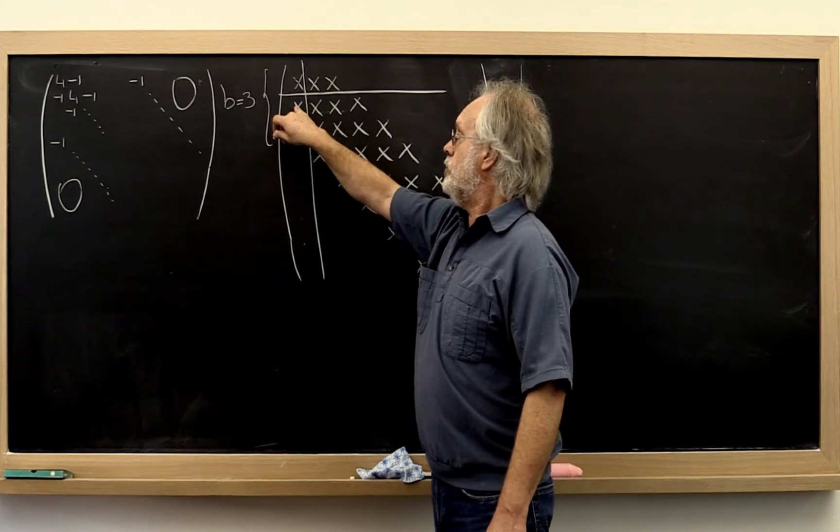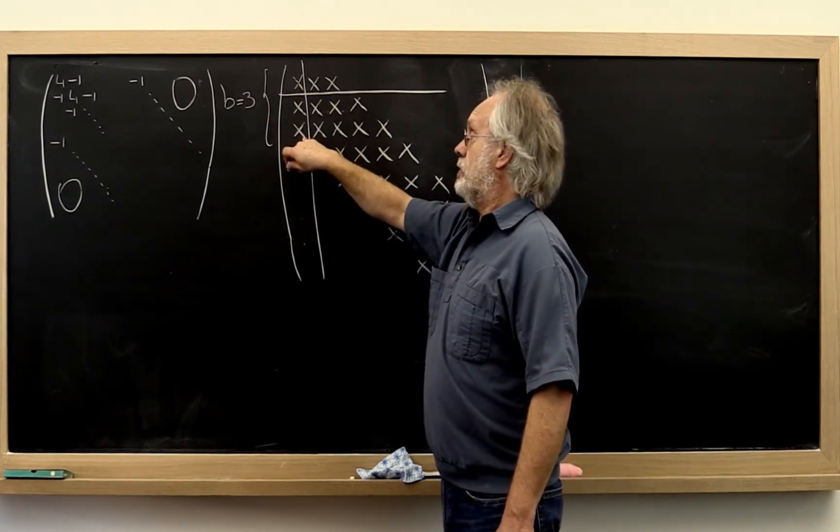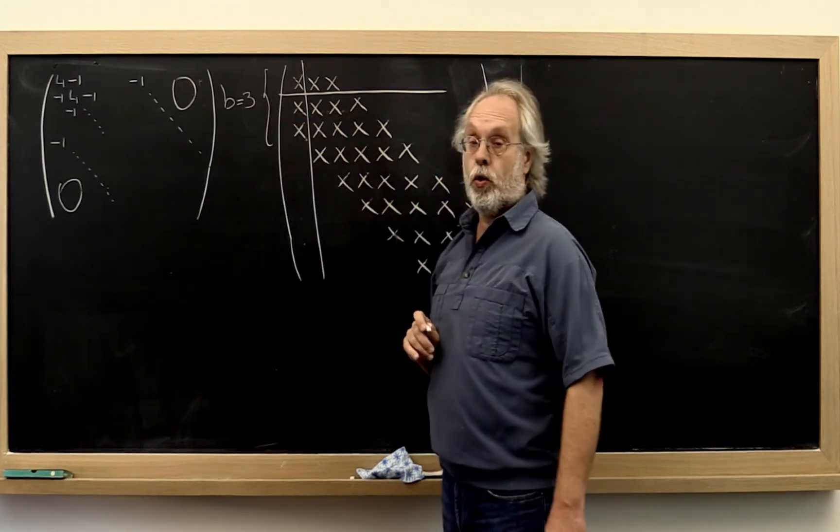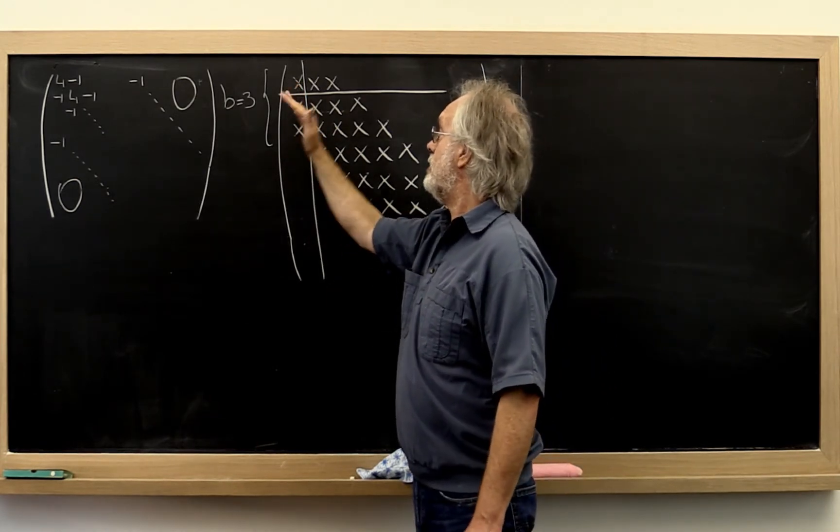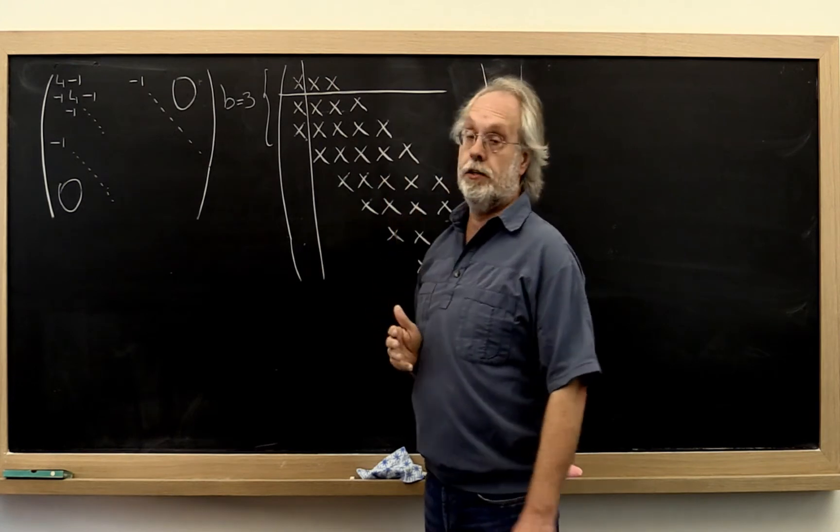And then you would do a divide by that square root. And again we're going to ignore that and we're going to assume that the cost is actually in doing the symmetric rank one update of the rest of the matrix.